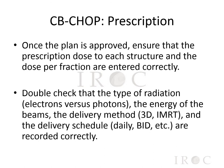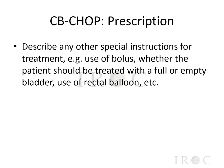The last letter in the CBCHOP acronym stands for prescription. Once the plan is approved, ensure that the prescription dose to each structure and the dose per fraction are entered correctly into the computer. Double-check that the type of radiation, the energy of the beams, the delivery method, and the delivery schedule are also recorded correctly. At this final step, it's also important to describe any other special instructions for treatment — this could include the use of a bolus, whether the patient should be treated with a full or an empty bladder, or the use of a rectal balloon. All instructions should be recorded accurately so they can be verified when the patient arrives for treatment.